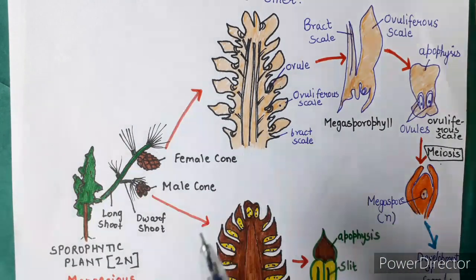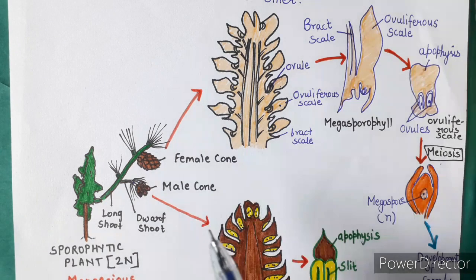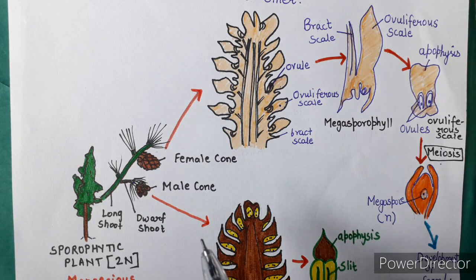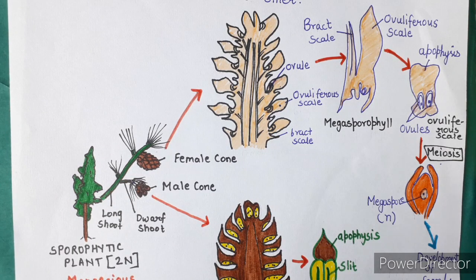This is called heteromorphic alternation of generation. I have made an example using pinus. If you like this video, please comment, subscribe, like, and share. Thank you so much.